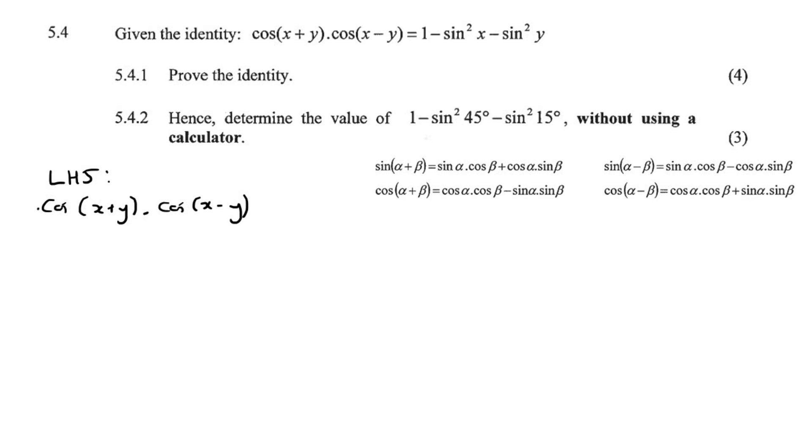So we've got cos(x+y). So that's the same as this one. So I'm going to expand it. So that's going to become cos x cos y minus sin x sin y. Put a bracket.